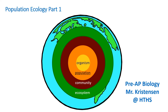Welcome to Population Ecology Part 1. When we break down ecology, we can look at the organism, which looks at just the lifestyles of a particular species — when it mates, who it mates with, and what types of environments it lives in. Populations are a group of different individuals of the same species. Community is different populations interacting with each other, such as predator and prey. And the ecosystem looks at these communities and energy flow and matter cycling in them.